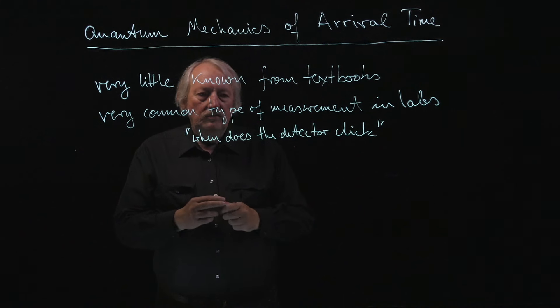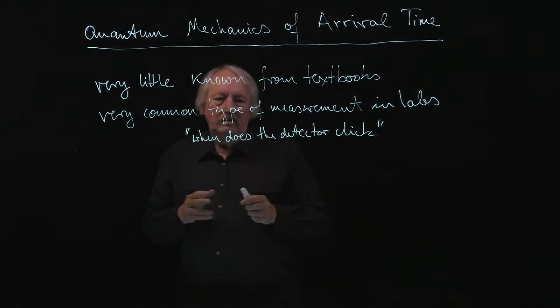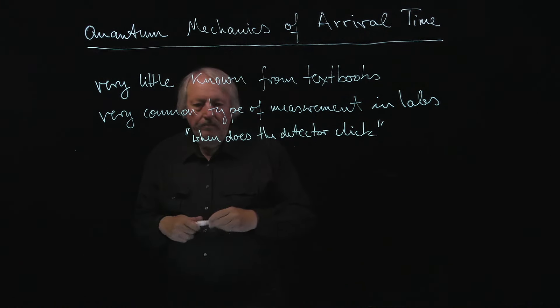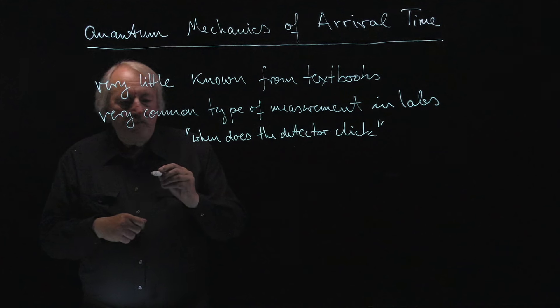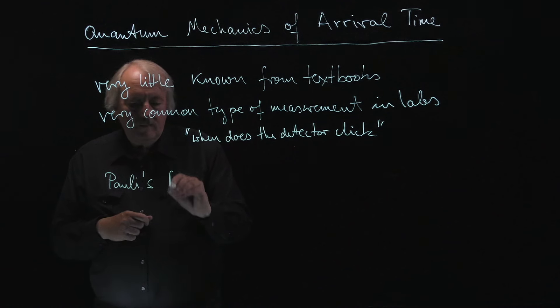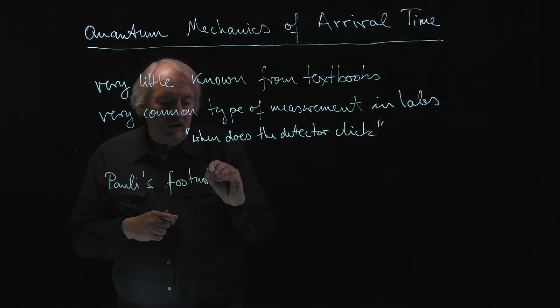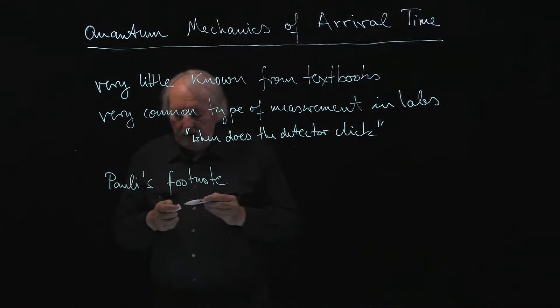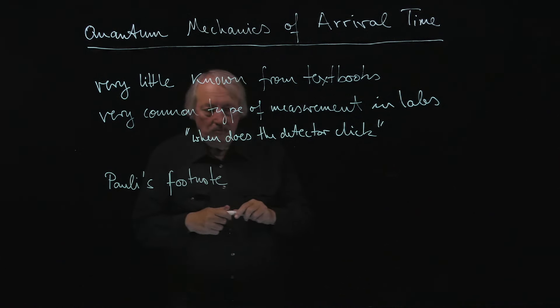So one stopper to this whole thing, and maybe the reason why people say time is not an observable, is Pauli's footnote. In the famous Handbuch article he explains why time cannot be an observable.